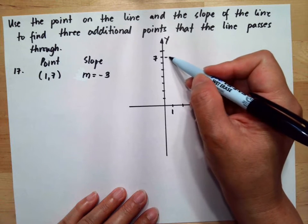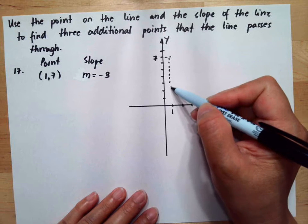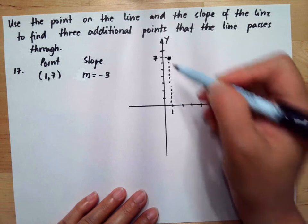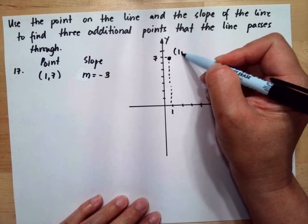So if x is 1, y is 7, so this is your point (1,7).